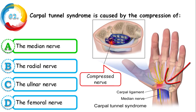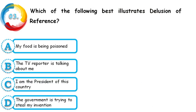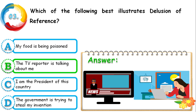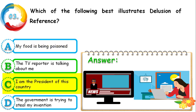Question 3: Which of the following best illustrates a delusion of reference — 'My food is being poisoned,' 'The TV reporter is talking about me,' 'I am the president of the country,' or 'The government is trying to steal my invention'? The correct answer is 'The TV reporter is talking about me,' where the person has a repeated thought about being referred to by someone. 'My food is being poisoned' is delusion of persecution, and 'I am the president' is delusion of grandiosity.